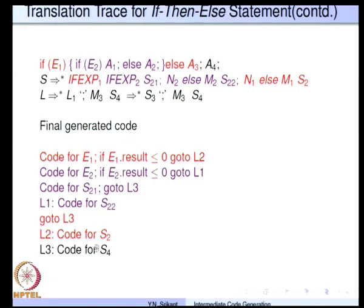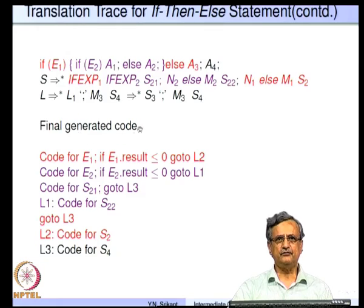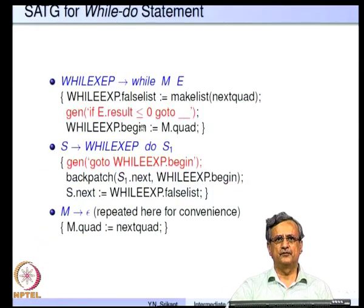Here is the final code that is generated. This is the trace of actions that happen during the code generation process, including back-patch and gen.